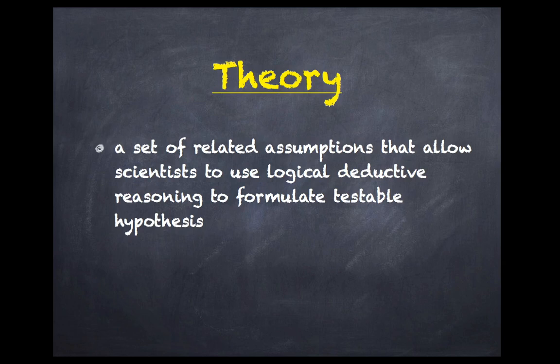Moving on, let's define what a theory is. A theory is a set of related assumptions that allow scientists to use logical deductive reasoning to formulate testable hypotheses. A single assumption can never fill all the requirements of an adequate theory. A single assumption also could not serve the integration of several observations, which is something that a useful theory should do.